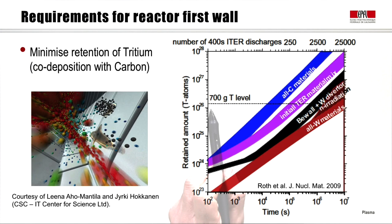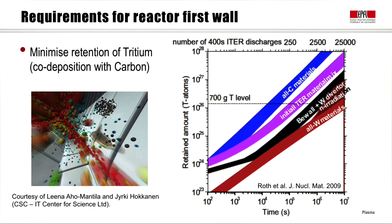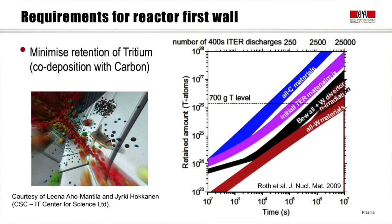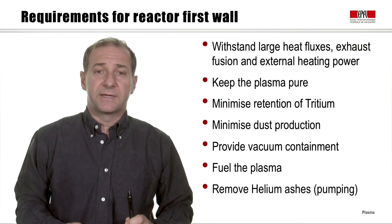The retained tritium has a level of 700 grams that we cannot exceed. With a carbon-based wall, we go above that quite quickly — only after a few hundred ITER discharges. Looking at the tungsten-based materials (the red stripe), we never go above that level even with 25,000 discharges of ITER at 400 seconds. So tungsten-based materials are compatible with the tritium inventory requirements for the plasma walls.